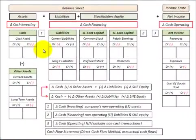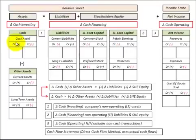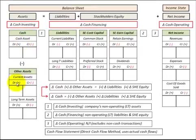Here we're going to be using the direct cash flow method to determine our cash flow statement. This is where we use the actual cash flows through our cash account. We're going to be using the accounting equation where assets equal liabilities plus stockholders' equity, and I've broken assets apart between the cash asset and all other assets.